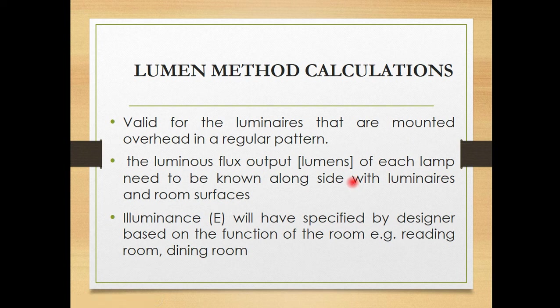We'll look at the actual luminaire types, their advantages and disadvantages. But for now, we're concerned with calculating the number of lamps needed. The illuminance level is provided by the designer based on the room's function — for example, public entrance halls require 200 lux, passageways and staircases 100 lux, and fine work areas 1,000 lux.